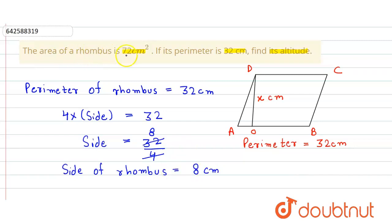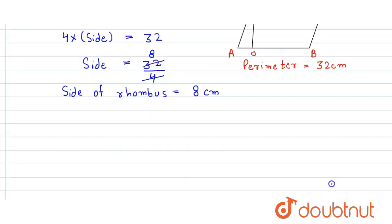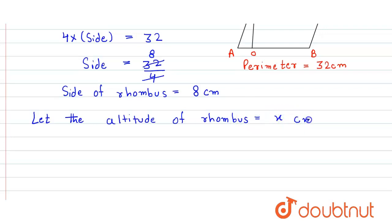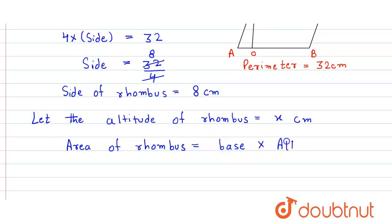It is given that the area of the rhombus is 72 centimeter square. We need to find its altitude, so let the altitude of the rhombus be x centimeter. Now we use the formula: area of rhombus = base × altitude.